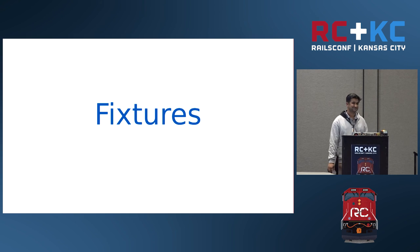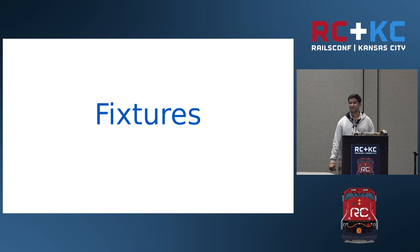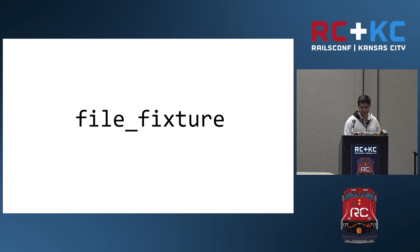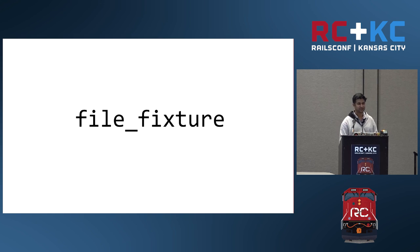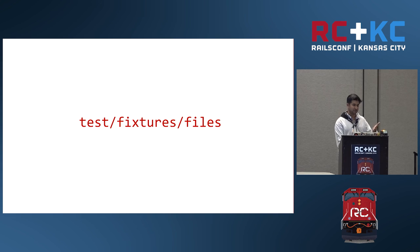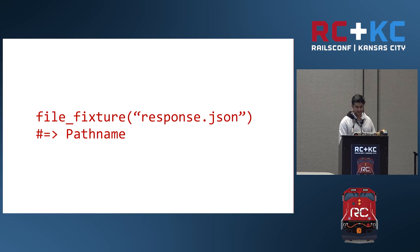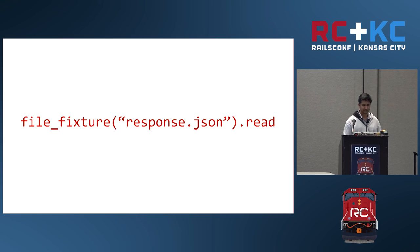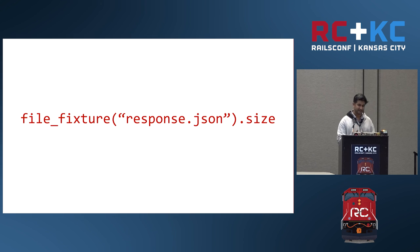How many of you like fixtures? Whenever we talk about testing in Rails, that talk is not complete without talking about fixtures. In Rails 5, there are some nice additions to fixtures. The first one is file fixtures. If you have JSON files in your test support folder, there is good news — you no longer have to write small helpers in your test helper for accessing those files. You get a helper from Rails. You can store fixture files in the `test/fixtures/files` folder and just use the helper, passing the name of the file, and it will return that file object.